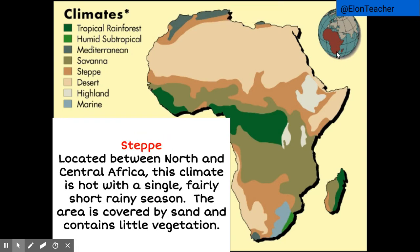The steppe climate is located at the edges of the desert climate between North and Central Africa. It is kind of a cross between the desert and savanna climates. The steppe climate is hot with a single, fairly short, rainy season. The area is covered by sand and contains little vegetation.